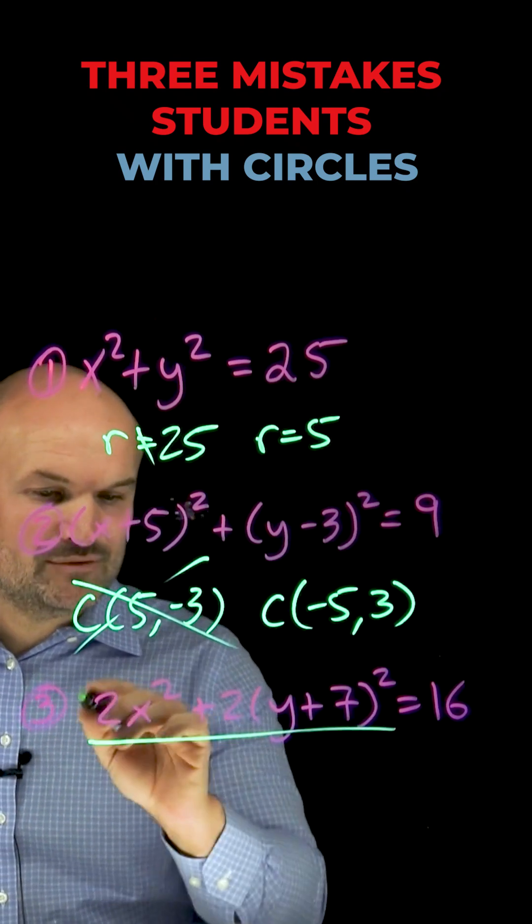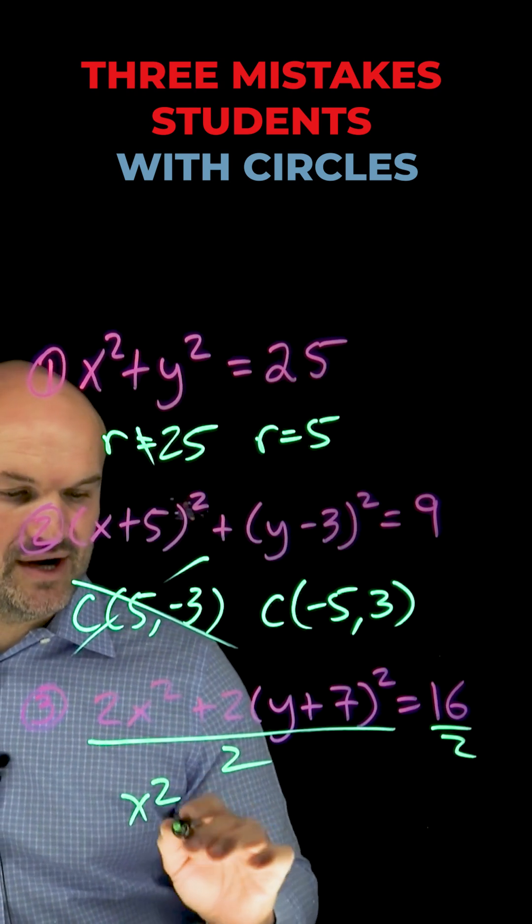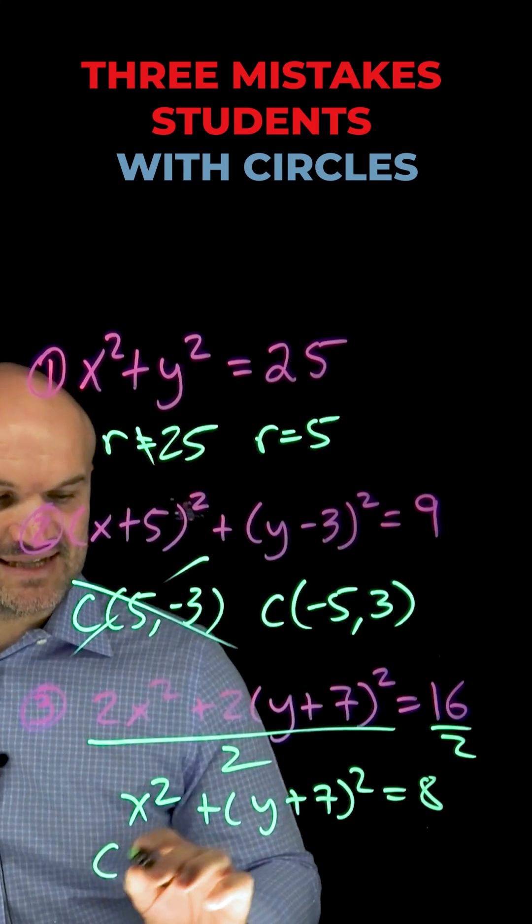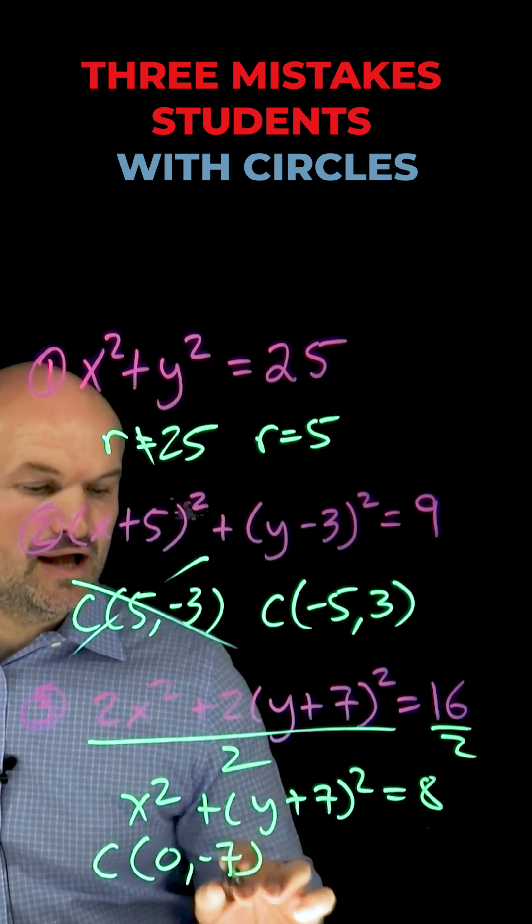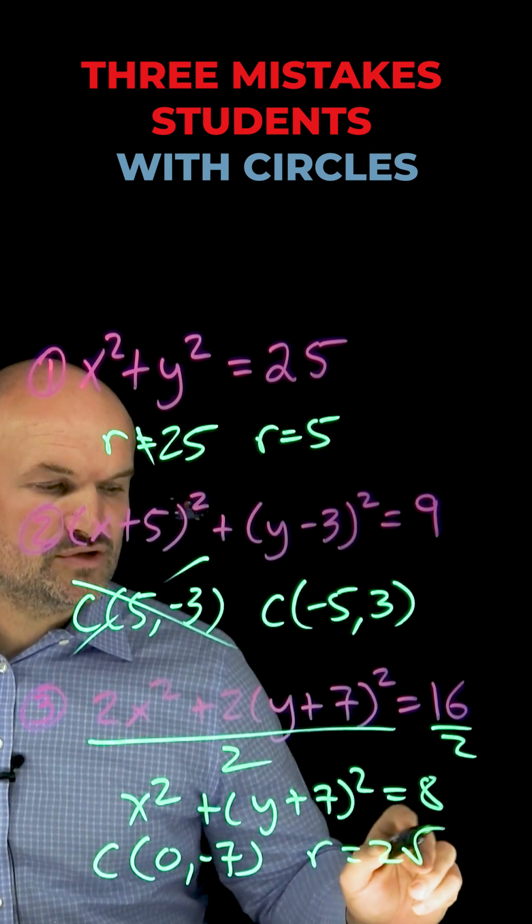So the first thing you need to do is get rid of these coefficients. So divide by 2 on both sides. You'll have x squared plus y plus 7 quantity squared is equal to 8. So yes, the center is at 0, negative 7, but the radius is going to be at the square root of 8, which we can rewrite as 2 square root of 2.